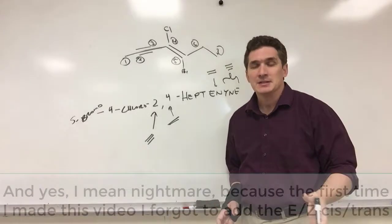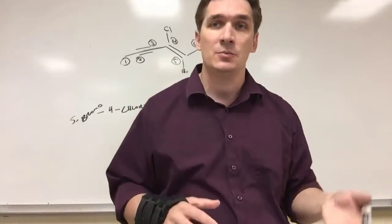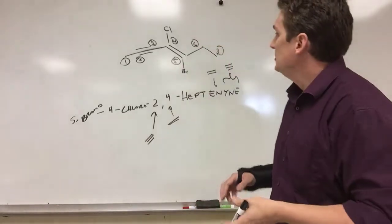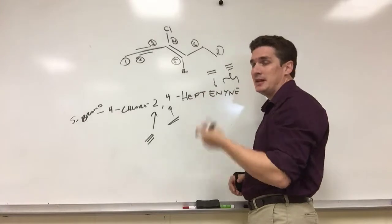What else is a nightmare about this? Remember, we also have to designate EZ configurations when we're dealing with double bonds as well. Using your Cahn-Ingold-Prelog priority rules, chlorine and chlorine are opposite in this case. They're entgegen.